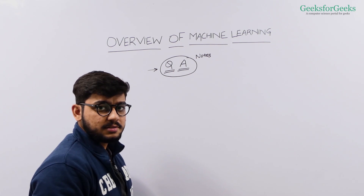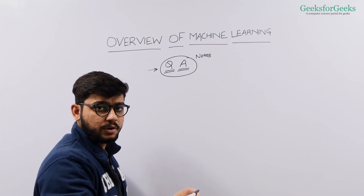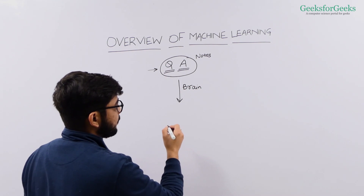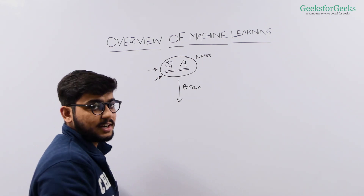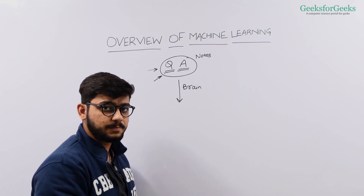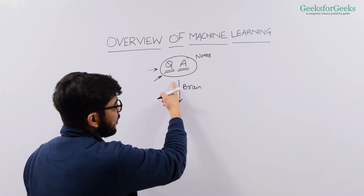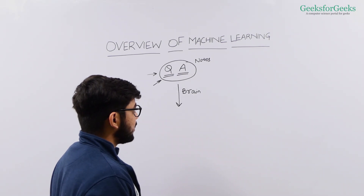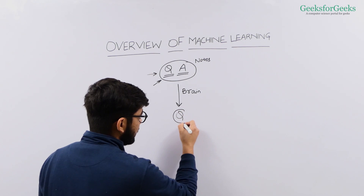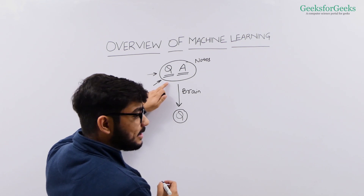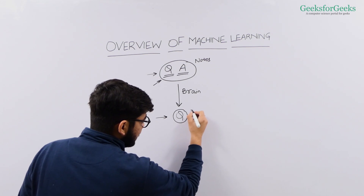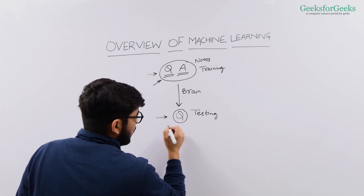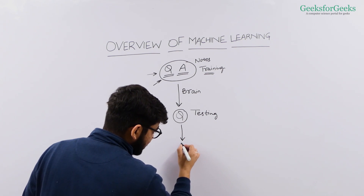Before examinations, when you come home from school or go to tuition, what you actually do is train your brain — so your brain is your model. You train your brain on this training data, which is the class notes or notes your teacher gave you. When you are done, you go to your examination. In your examination, you get a question paper, and using the previous knowledge you gained while studying, you answer those questions. This is the testing phase, and the studying was the training phase.